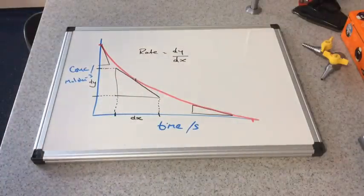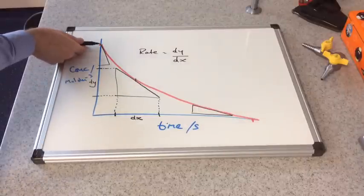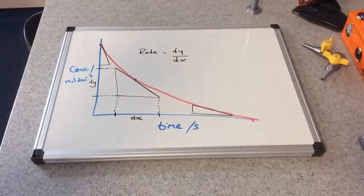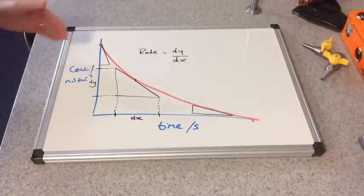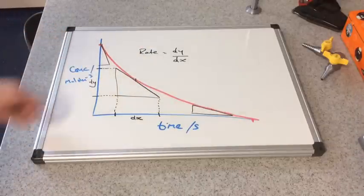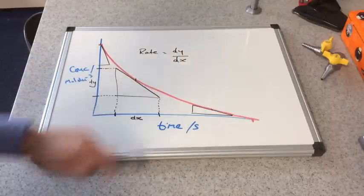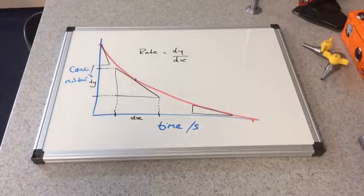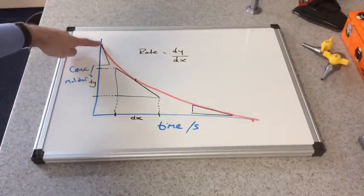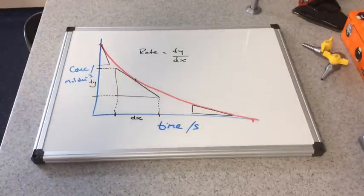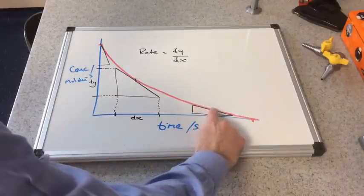I've drawn two more tangents to the curve. I've drawn one tangent here at the very start of the reaction. And I've drawn a tangent here which is towards the end of the reaction. And hopefully what you can see is the slope of the gradient is actually decreasing. So the gradient is at its steepest at the start. It's less steep here. And it's much less steep here. So therefore the rate is at its fastest or its highest at the start of the reaction. It's a medium rate at this point in the reaction. And it's slowing down at this point in the reaction.